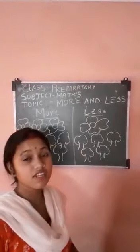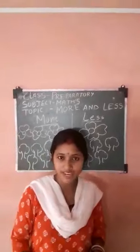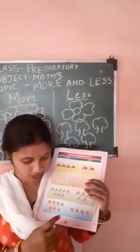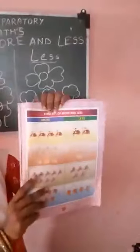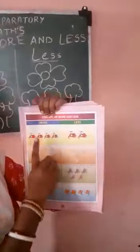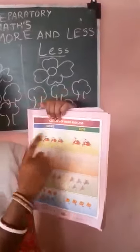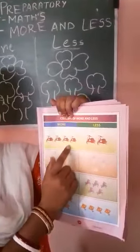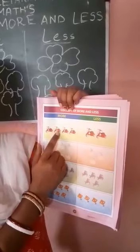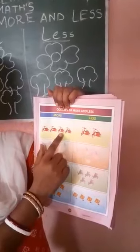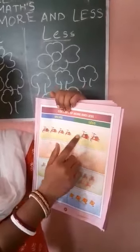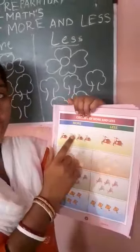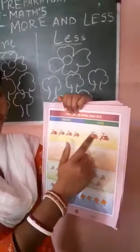Now I will show you some more activities in your book. In page number nine, there are two columns — more and less. Now we will count the numbers: one, two, three, four. And here is one, two. So this is more than this.